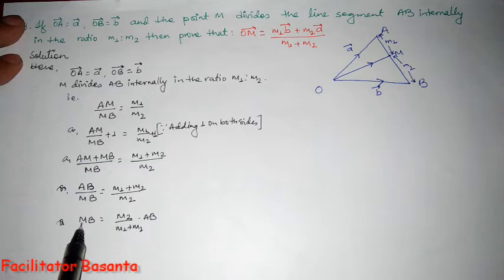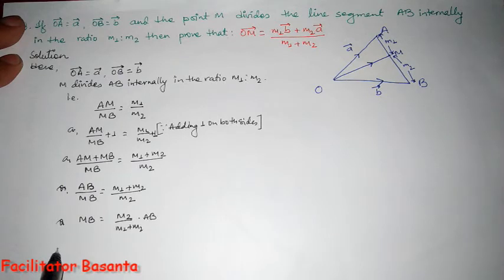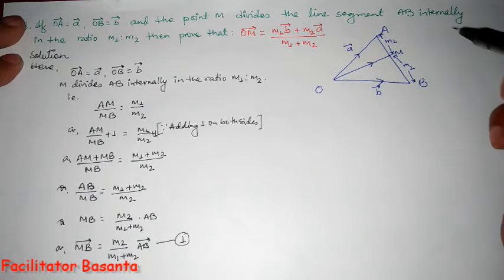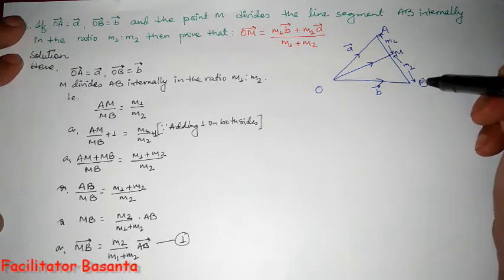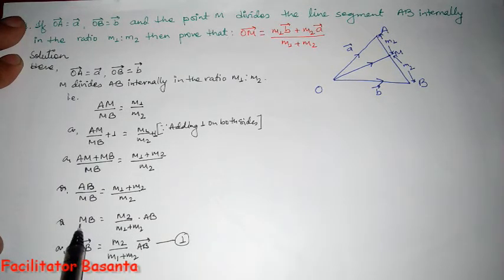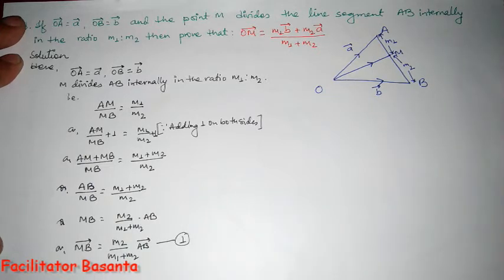Now, see — for MB and AB, they can be represented in the same direction. It means we can apply vectors on both sides. So, MB vector equals M2 divided by M1 plus M2 into AB vector. Let this be equation 1. Remember: if it were BM and AB, we could not apply vectors on both sides, but since MB and AB are in the same direction, we can.